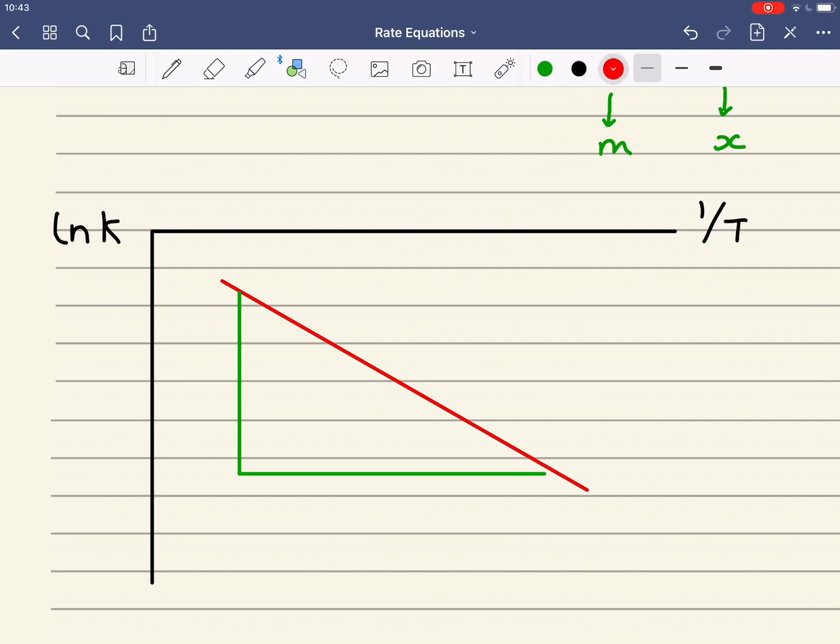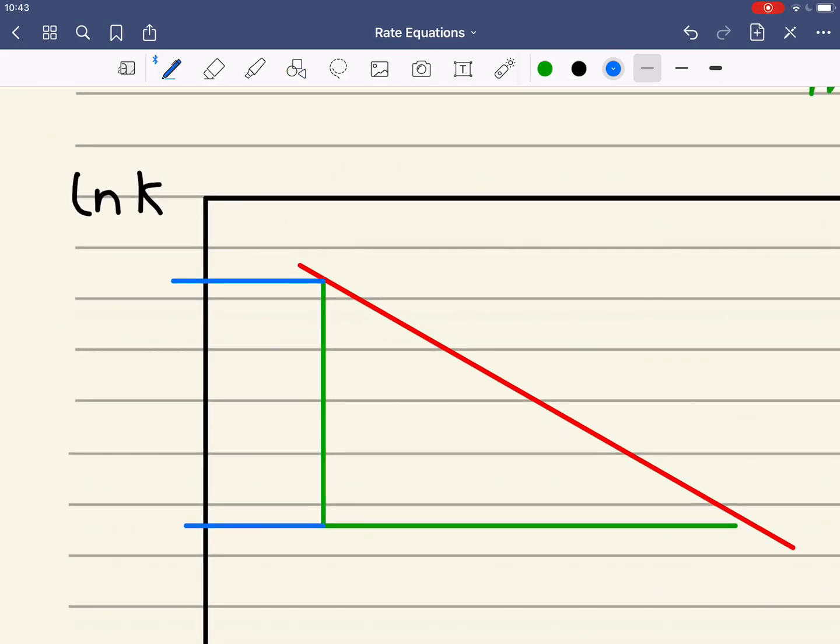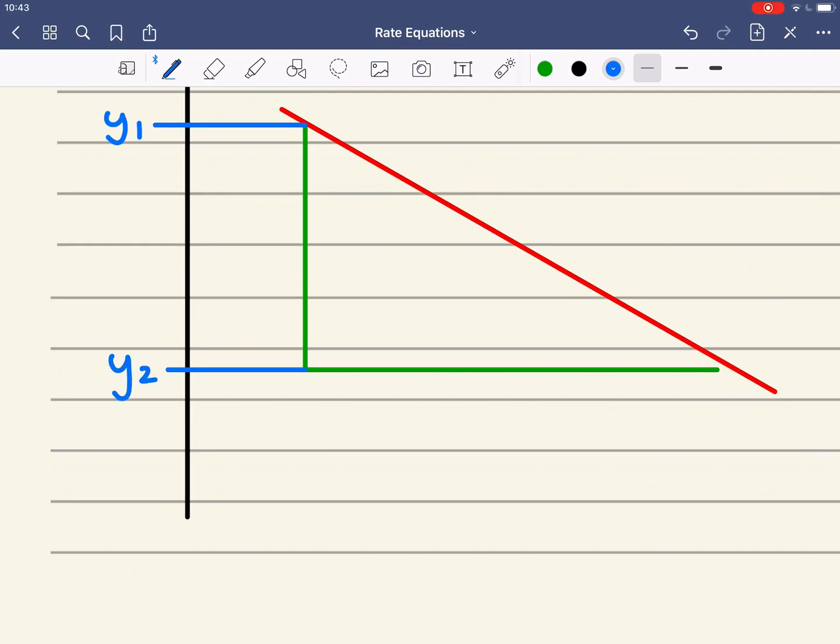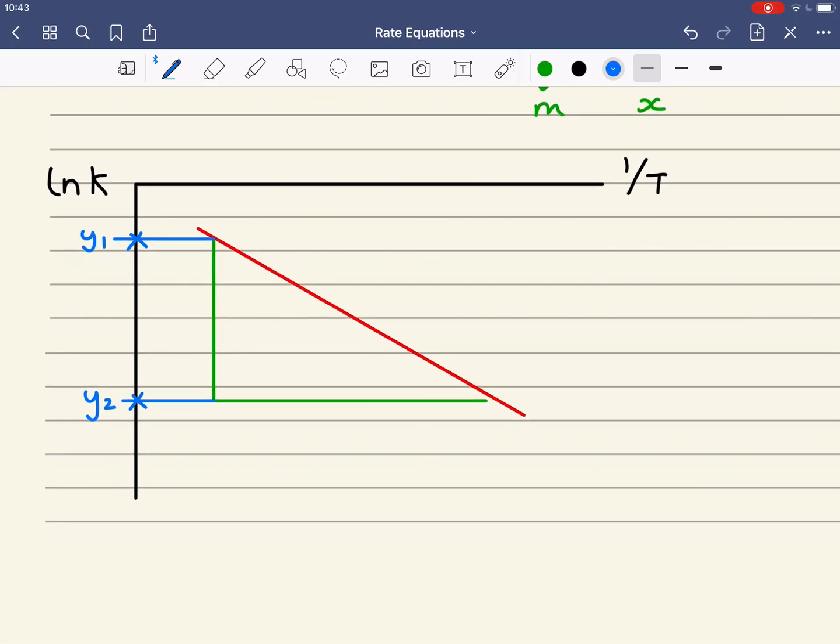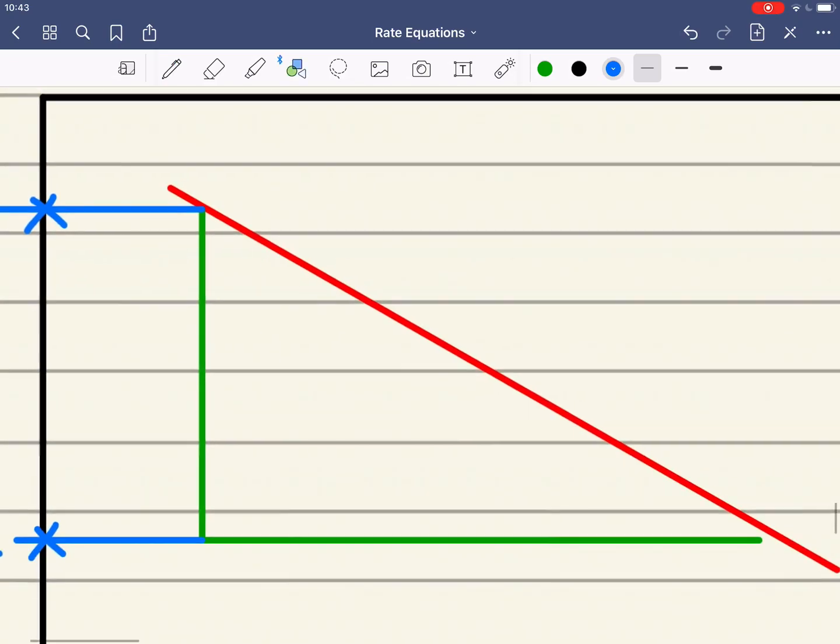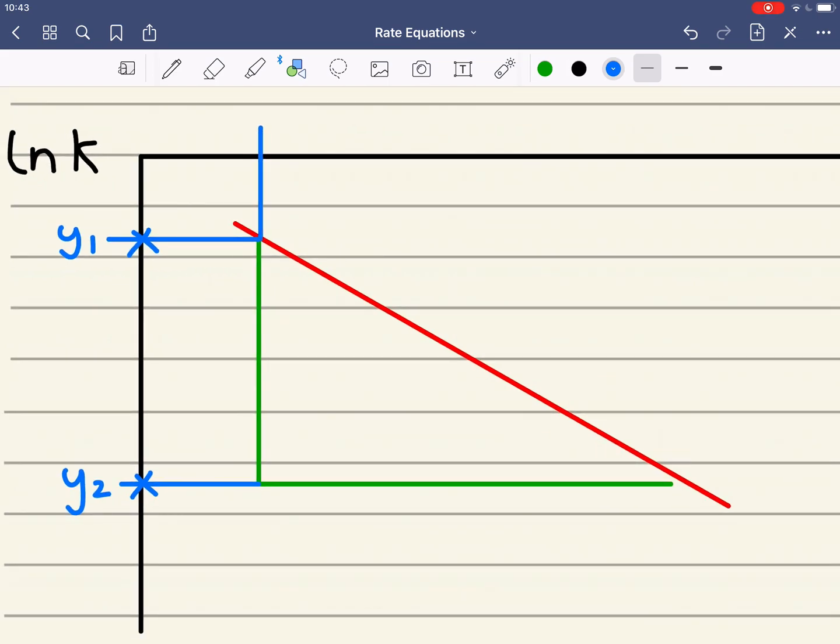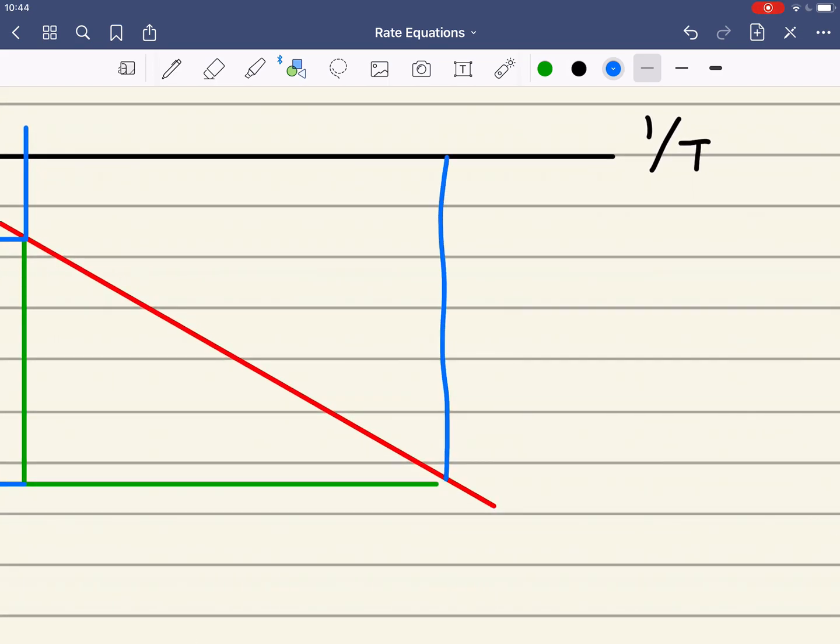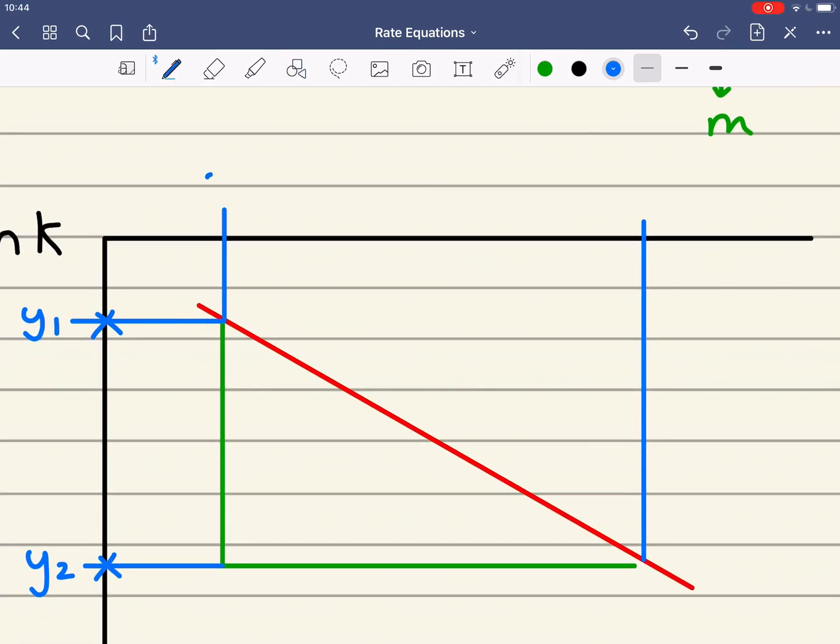What we then do is, to work out this gradient, we then work out what these two values are. So I've got, for example, I'm going to call this y1, I'm going to call this y2. And then I'll do the same for my x axis. So this here would be x1, x2.